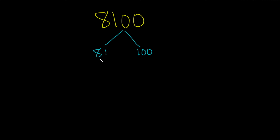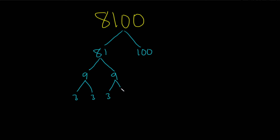81 is 9 times 9. And then we can factor the 9s as 3 times 3. So we get four 3s: 3, 3, 3, 3.